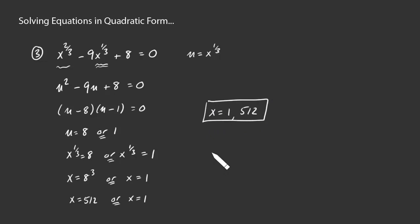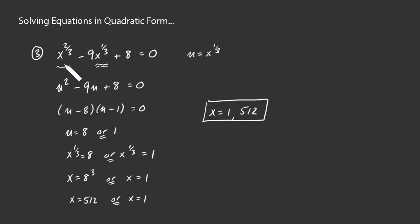That's yet another example of an equation in quadratic form. The general strategy: look for a constant, maybe a constant times something, and then a constant times the square of that something. Set u to be that something, solve the related quadratic, then replace u and solve whatever remains. That's how you deal with quadratic form.